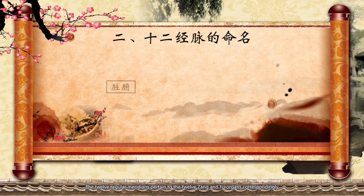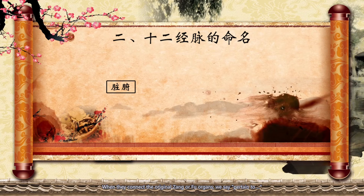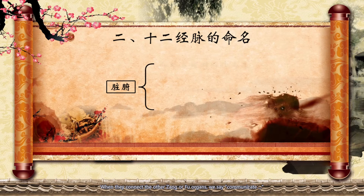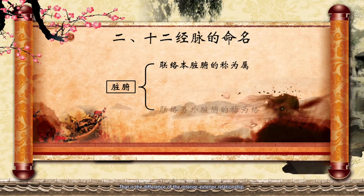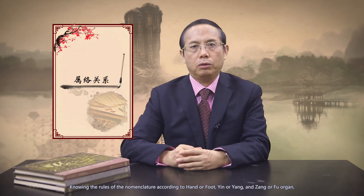Third, zang or fu. The twelve regular meridians pertain to the twelve zang or fu correspondingly. When they connect the original zang or fu organs, we say 'pertain to.' When they connect the other zang or fu organs, we say 'communicate.' That is the difference between the interior and the exterior relationship. Knowing the rules of nomenclature according to hand or foot, yin or yang, and zang or fu organs will help us better understand the characteristics of the twelve regular meridians.